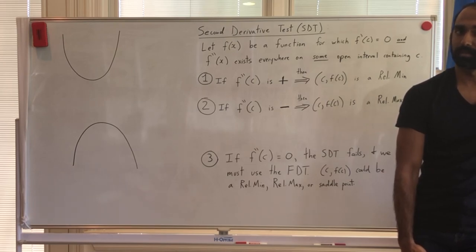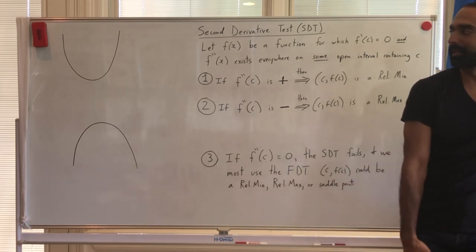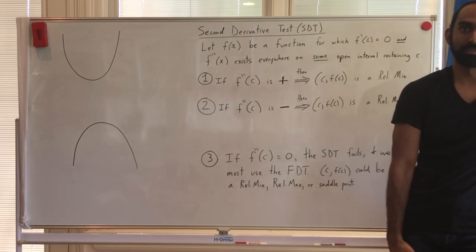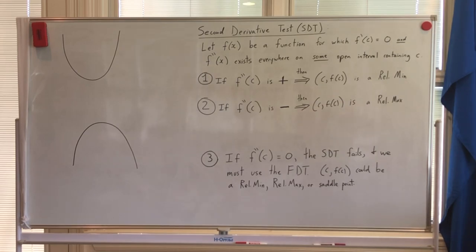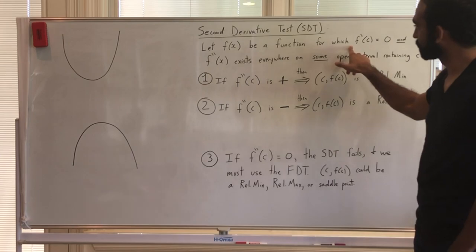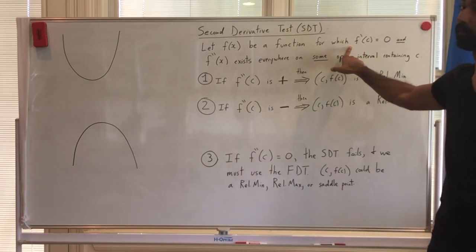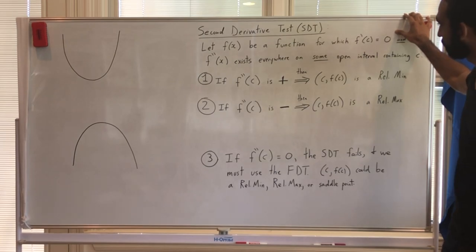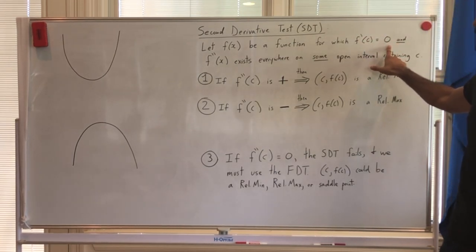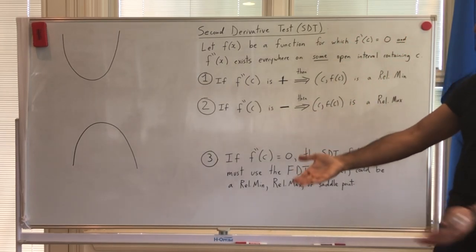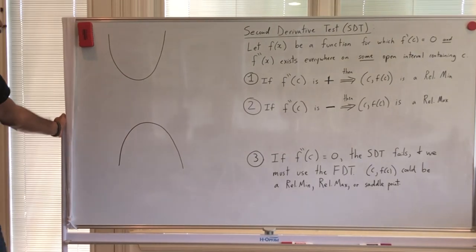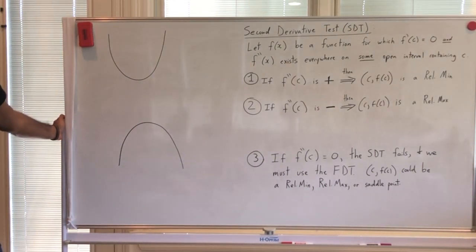We were sort of using this on problems in the last video. You may be thinking: why do we need a second derivative test? The FDT seems like it gets the job done pretty well. Moreover, the SDT is more restrictive than the first derivative test. For the FDT, I could test whether f prime of c was zero or undefined. But for the second derivative test, you can only test where f prime of c is zero. Short answer to why we'd still use it: oftentimes the computations are much easier, even though we've got this more restrictive case.